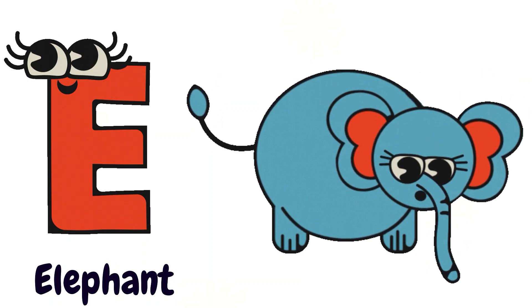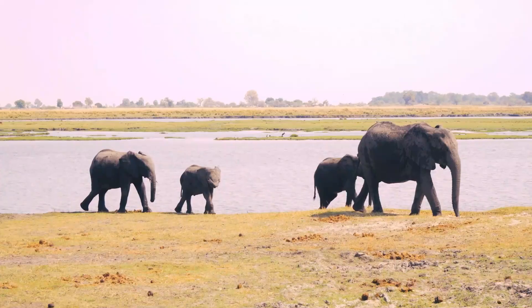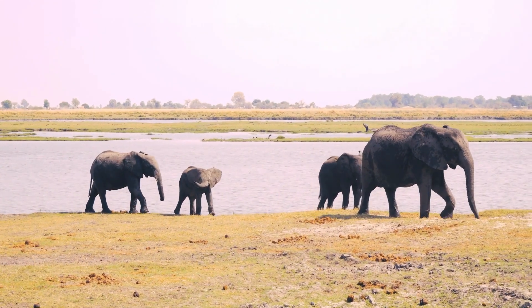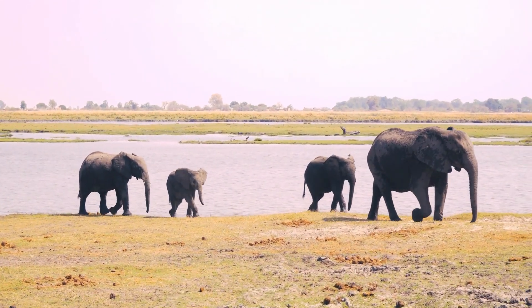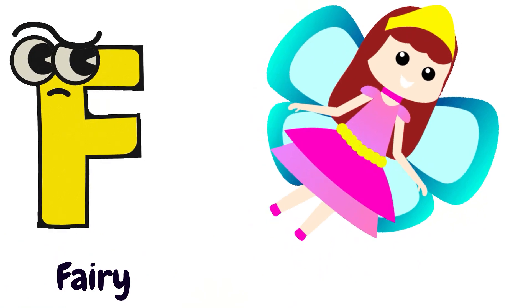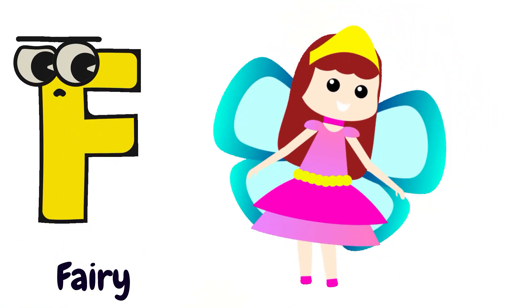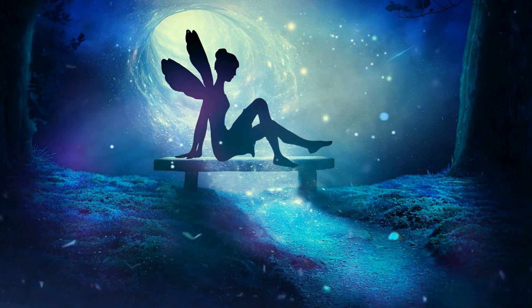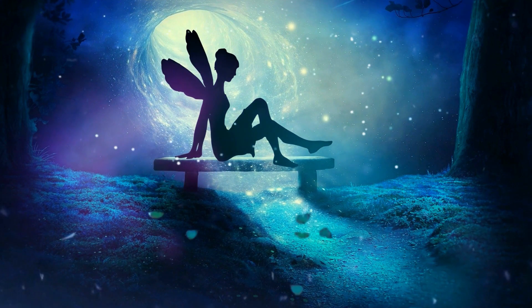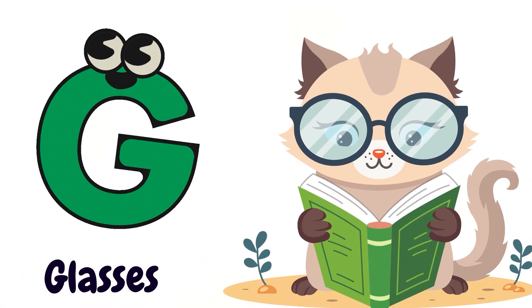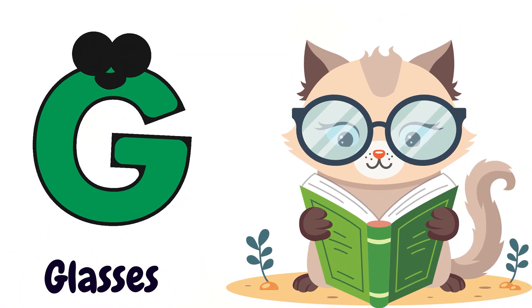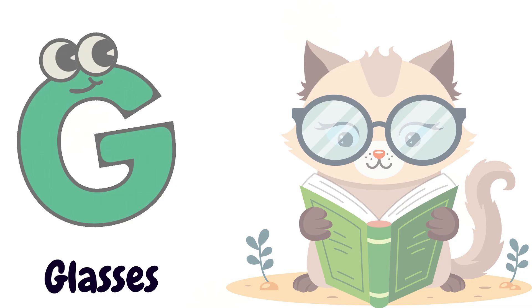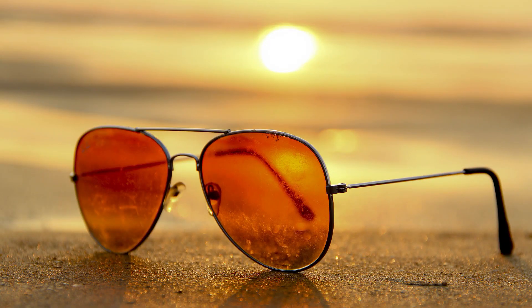E is for Elephant. A, A, A, A, Elephant. F is for Fairy. F, F, F, Fairy. G is for Glasses. G, G, G, G, Glasses.